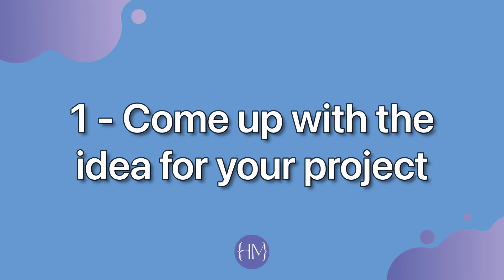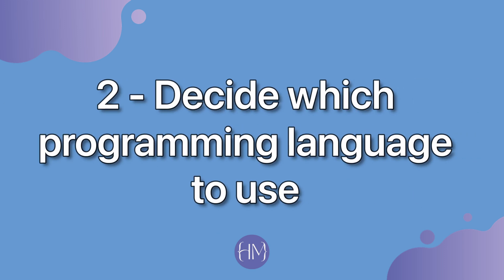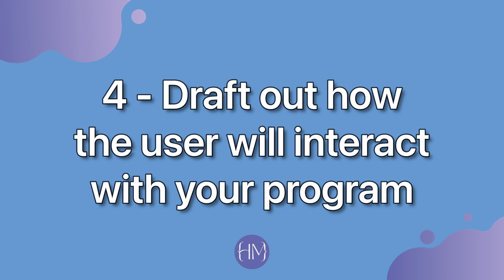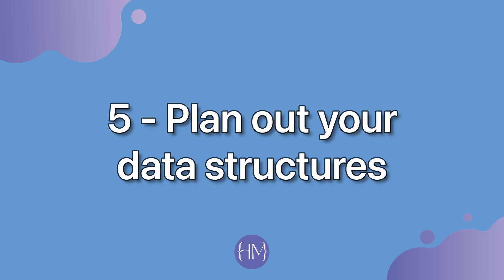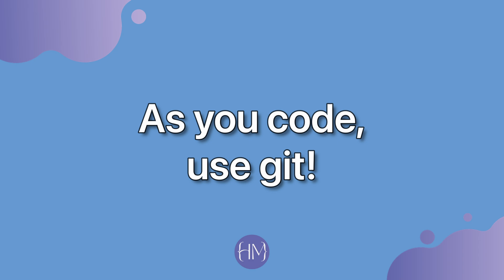Those are the six steps I recommend for planning your capstone project. Step one: come up with the idea. Step two: decide which programming language to use. Step three: decide what the main features are. Step four: draft how the user will interact with the program. Step five: plan out the data structures. Step six: break your program into smaller tasks. Use Git throughout development, and make a document for your plan so you have an organized, overall understanding of what your capstone project is all about.